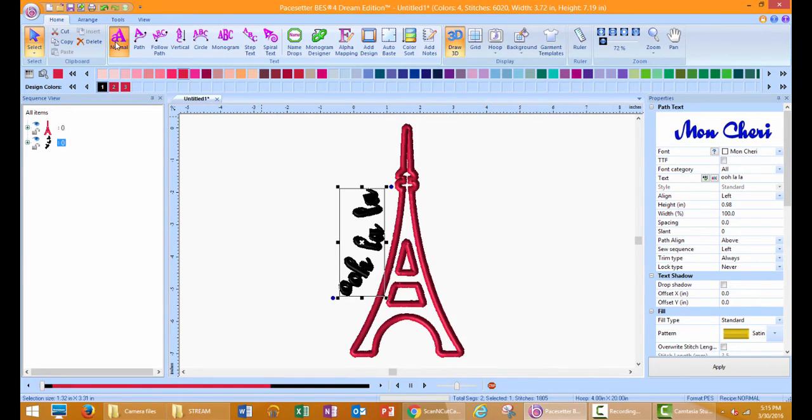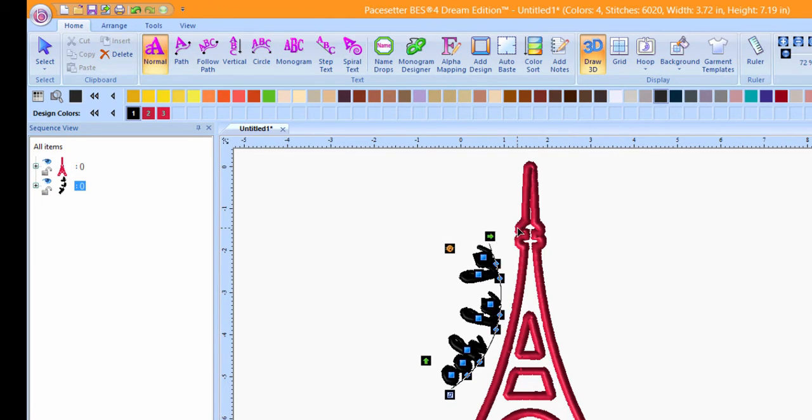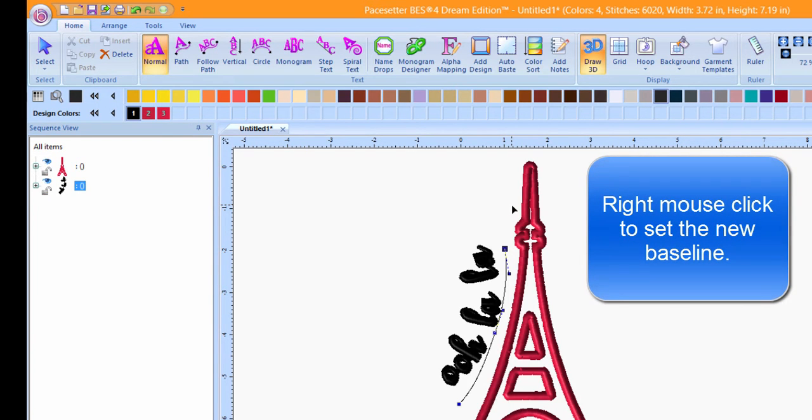If you want to adjust the path, click on the Normal Text Tool, right mouse click and choose Edit Baseline. Left mouse click on an adjustment node and move it into position. Move the node's adjustment handle to adjust the arc. Right mouse click away from the lettering to set the new baseline.